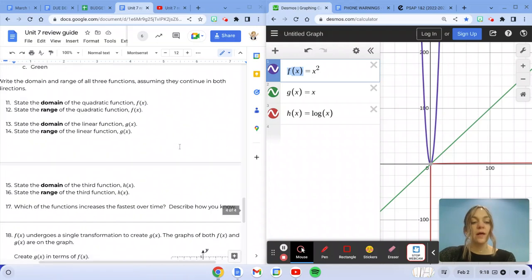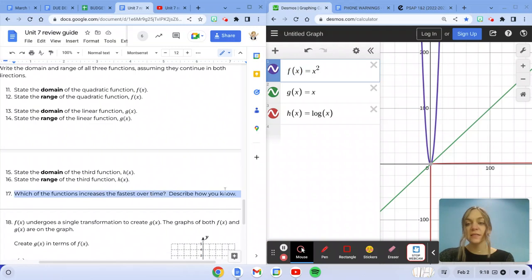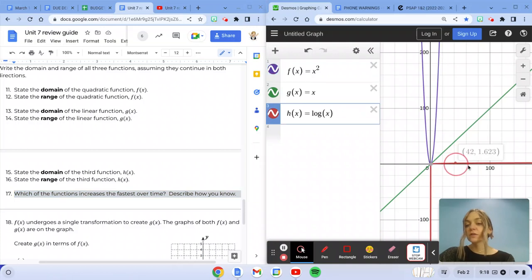Now we want the one that increases the fastest over time. So increasing quickly means going up quickly. This red graph, it looks like it's almost flat. It's going so slow. So I know that it's not going to be the red graph because it's really flat.